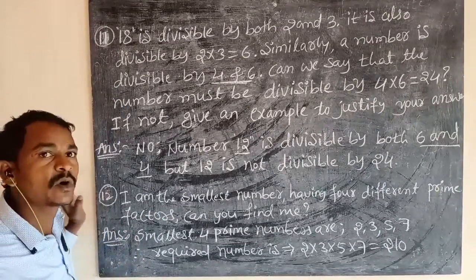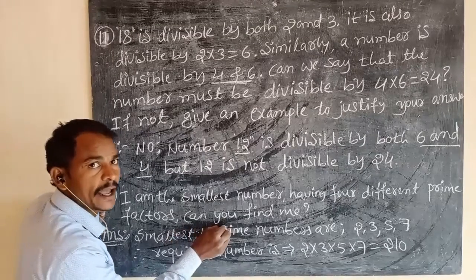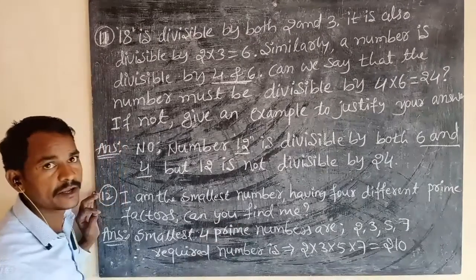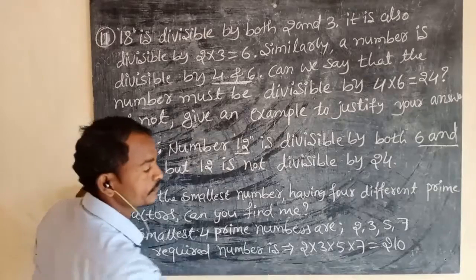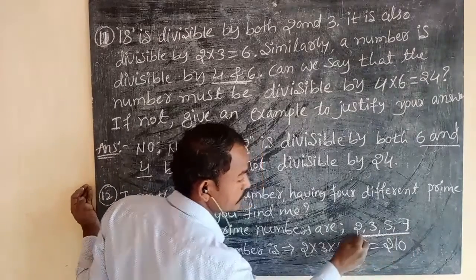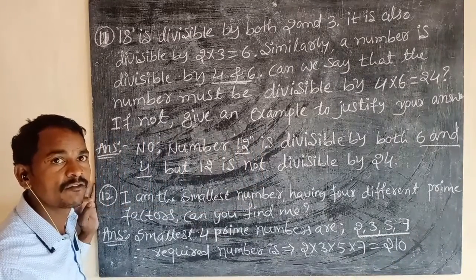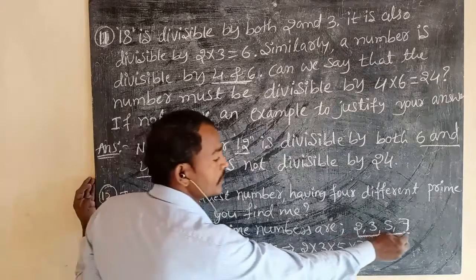So, the answer for this question is the smallest 4 prime numbers or prime factors are 2, 3, 5, 7. These are the 4 prime numbers.